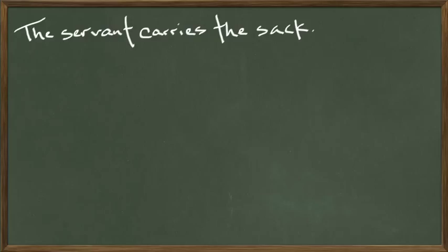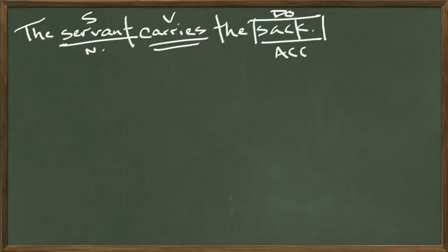Let's take a look. Here we have the sentence: 'The servant carries the sack.' Servant is the subject of the sentence — it's in the nominative case. He's carrying, which is the verb. What's he carrying? He's carrying the sack, which is the direct object in the accusative case. The article adjective 'the' we don't really need — we can leave those.